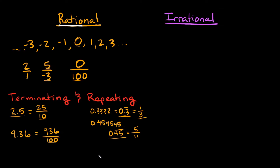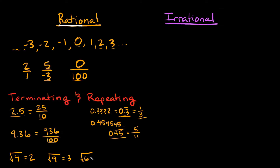The last type of rational numbers are perfect square roots. For example, the square root of 4 is a rational number because it equals 2, which is rational. The square root of 9 equals 3, which is also rational. The square root of 64 equals 8, which is rational. So perfect square roots are rational numbers.